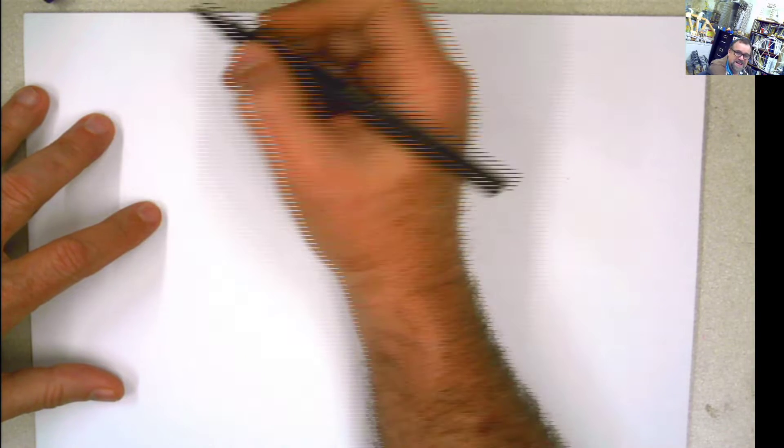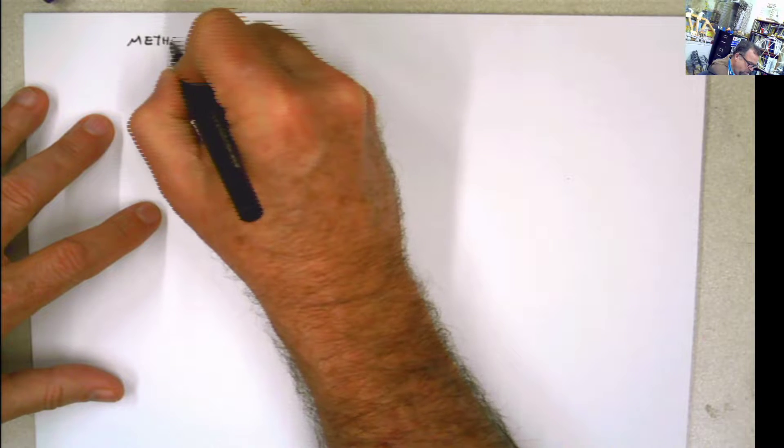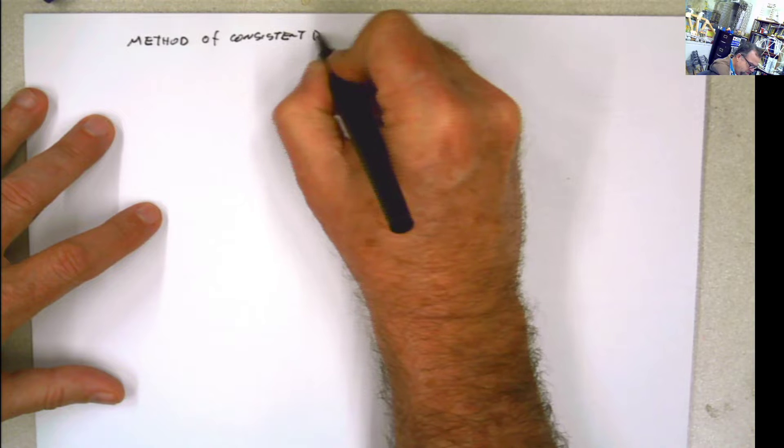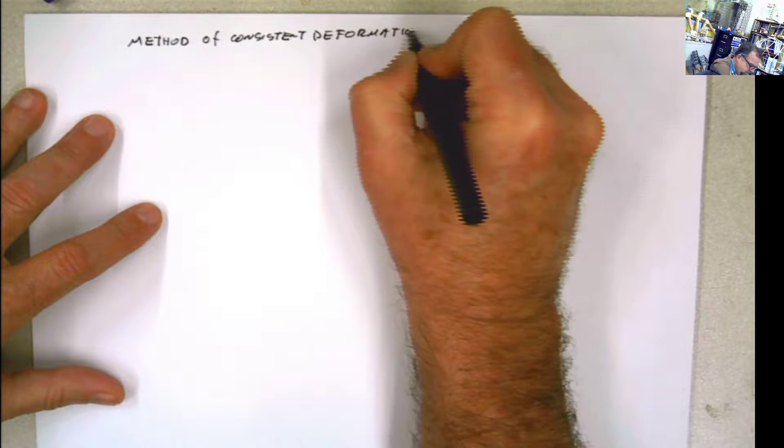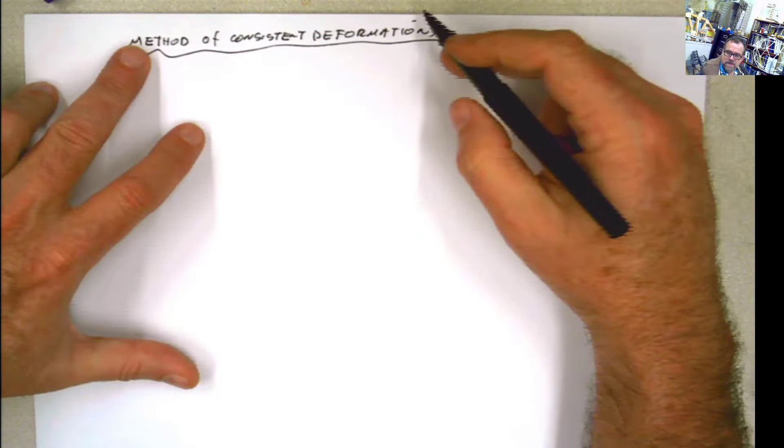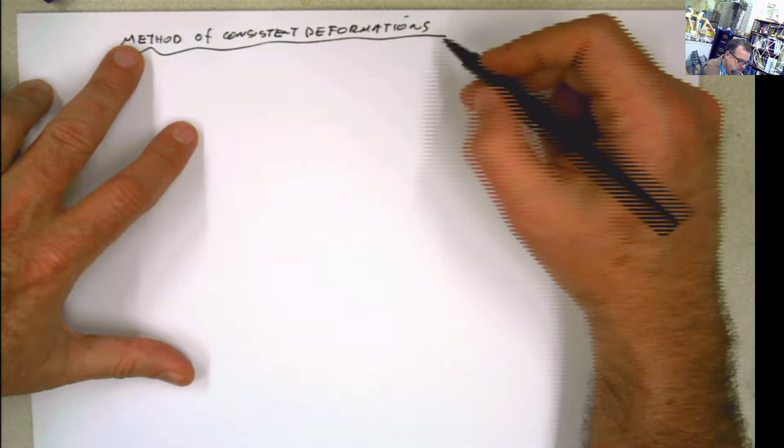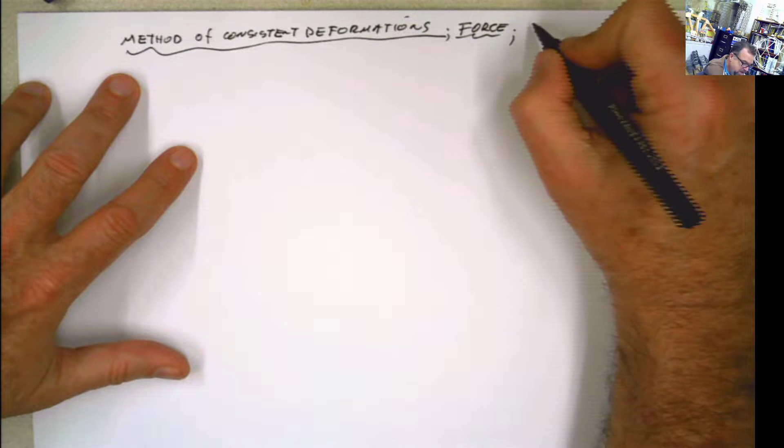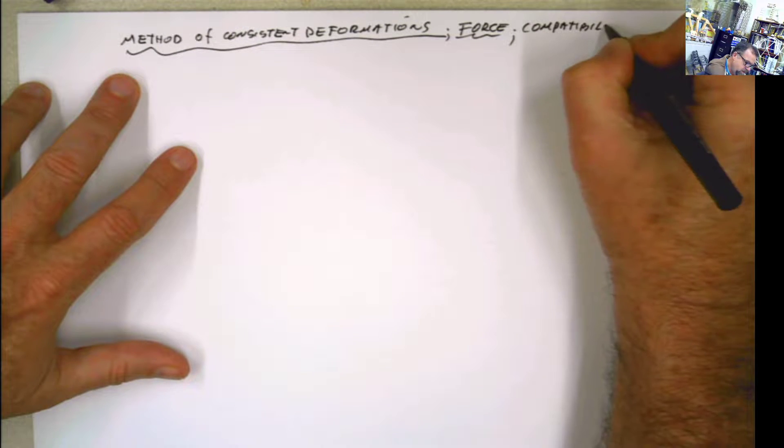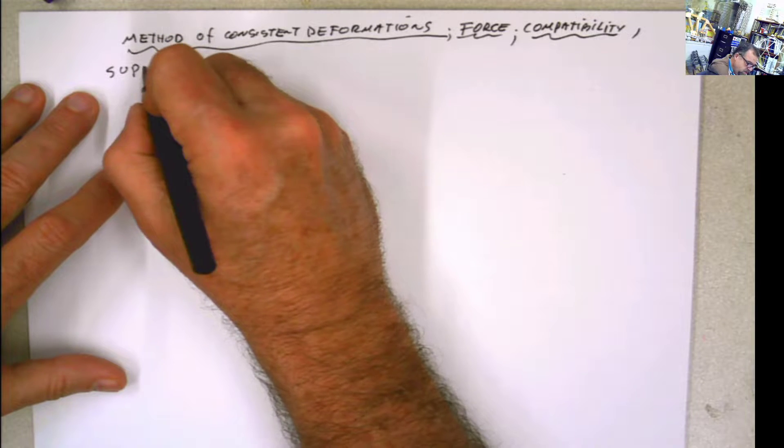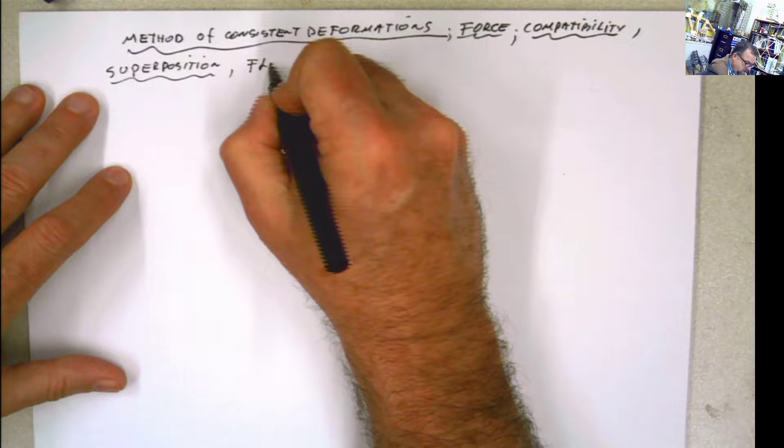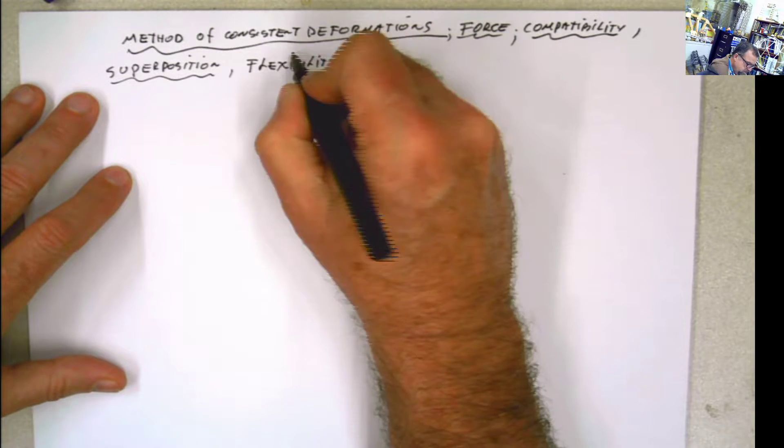Today we're going to be working for statically determined structures, and we're going to be using the method of consistent deformations. In my mind, this is the name that defines best this method, but it can also be called or you can find it referred as the force method, or compatibility method, or sometimes it's called superposition, or flexibility method.